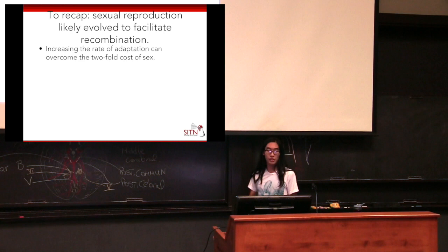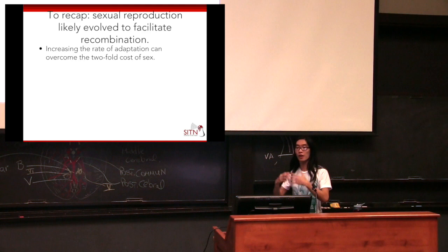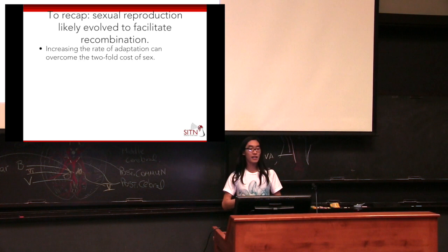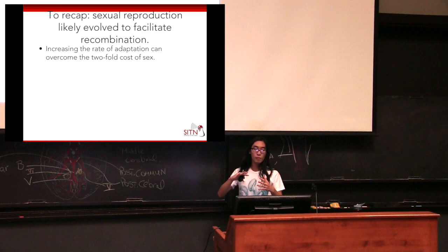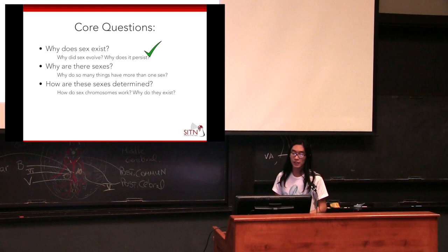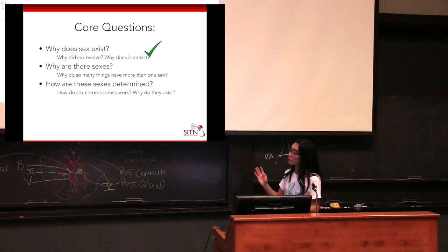To recap: sexual reproduction likely evolved to facilitate recombination. If you have sexual reproduction, you're having this recombination process over and over again, increasing the rate of adaptation, which can overcome the two-fold cost of sex. So even though you're generating fewer individuals per individual, you can adapt faster and thus out-compete asexual populations.